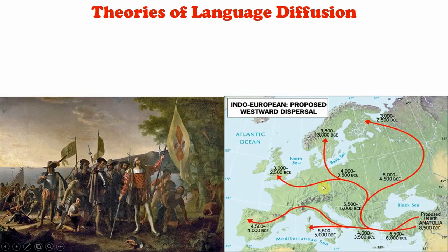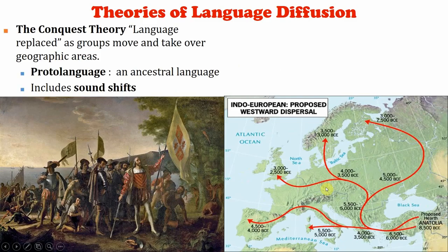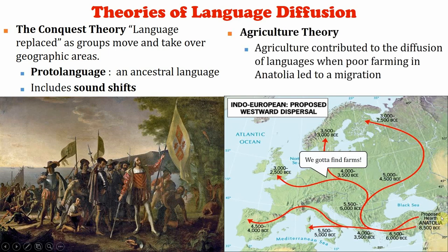What causes languages to move? There are two theories. One is the conquest theory — language is brought in, like Spanish explorers just telling people 'we're speaking Spanish now.' The other is people moving around to find greener pastures — they move in and bring a certain language with them. That's how language spread and diffused.